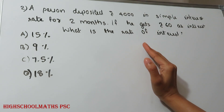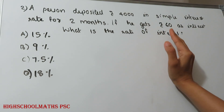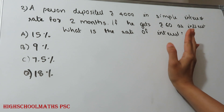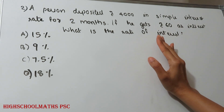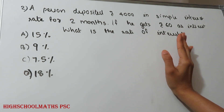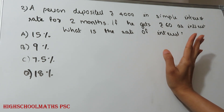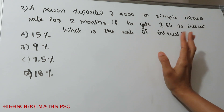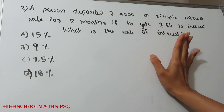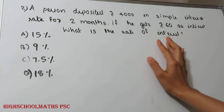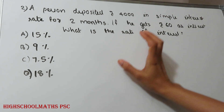Second question. A person deposited Rs. 4000 at simple interest for 2 months. If he gets Rs. 60 as interest, what is the rate of interest?